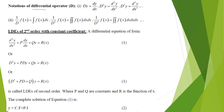The differential operator is denoted by capital D, where Dy equals the first derivative dy/dx. For the second derivative we use D²y, and for the third derivative D³y. When 1/D is multiplied with a function f(x), it represents integration of f(x) with respect to x. Similarly, 1/D² represents double integration and 1/D³ represents triple integration of f(x).